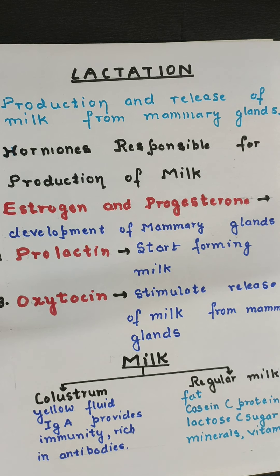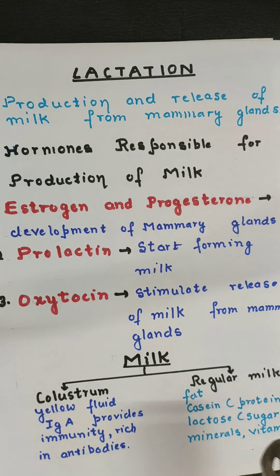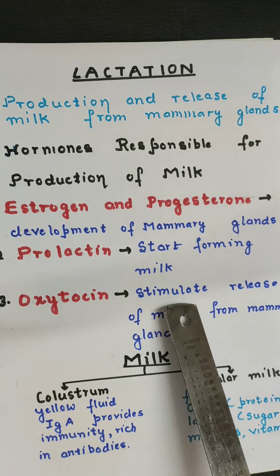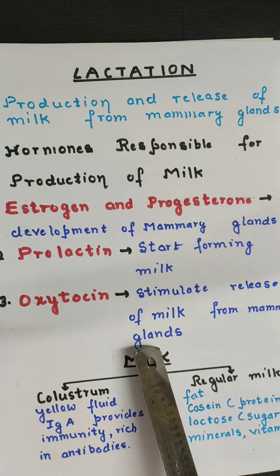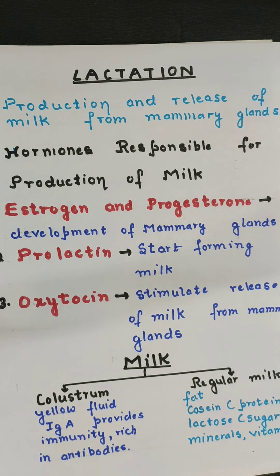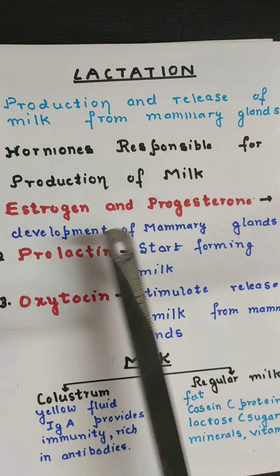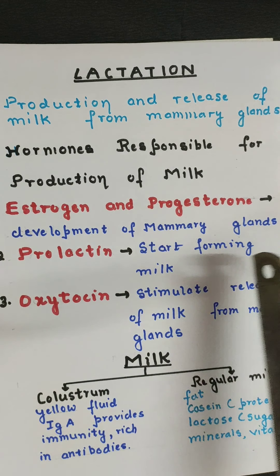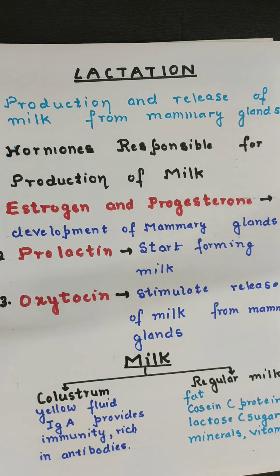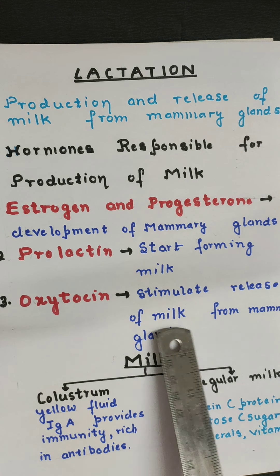The third hormone is again oxytocin. Oxytocin is produced after the birth of the child and stimulates the release of milk from the mammary glands. After birth, the baby needs nutrition, and when the baby sucks, oxytocin helps in pumping and releasing milk from the mammary glands. So there are three hormones: estrogen and progesterone for development of mammary glands, prolactin for formation of milk, and oxytocin for release of milk.